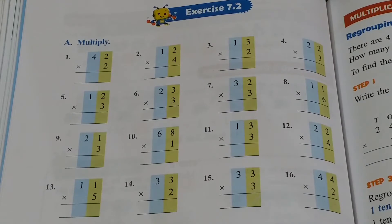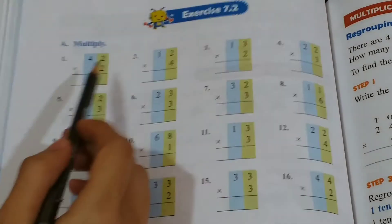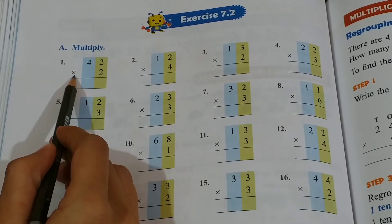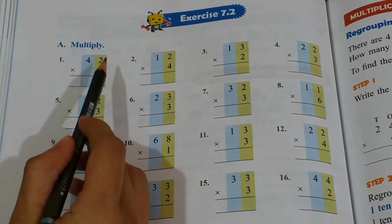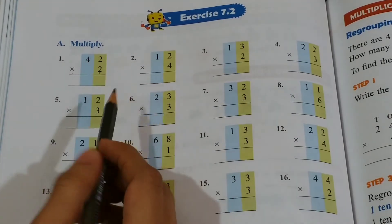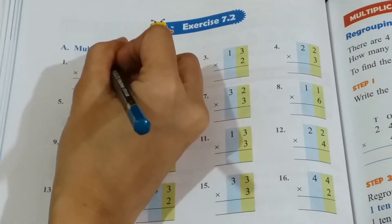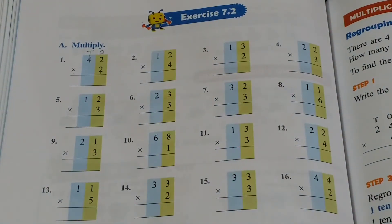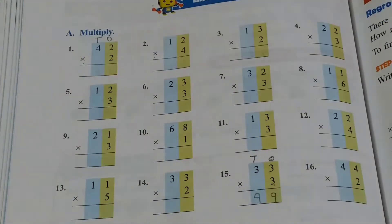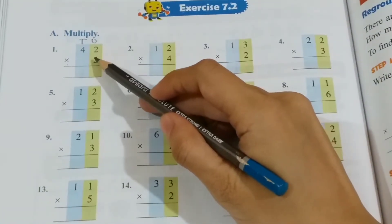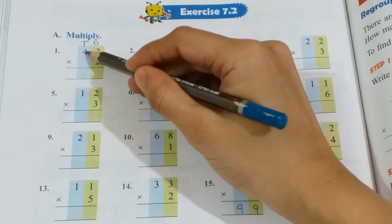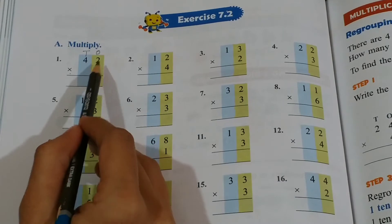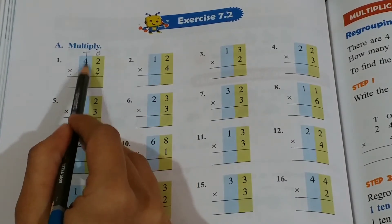Now children, have a look at the first sum. What is the sign given over here? This is a multiplication sign, so you have to multiply. The numbers given are 42 into 2. First you have to write TO on top. We'll multiply 2 with 2 first, and then we'll multiply 2 with 4 — so 2 into 2, then 2 into 4.